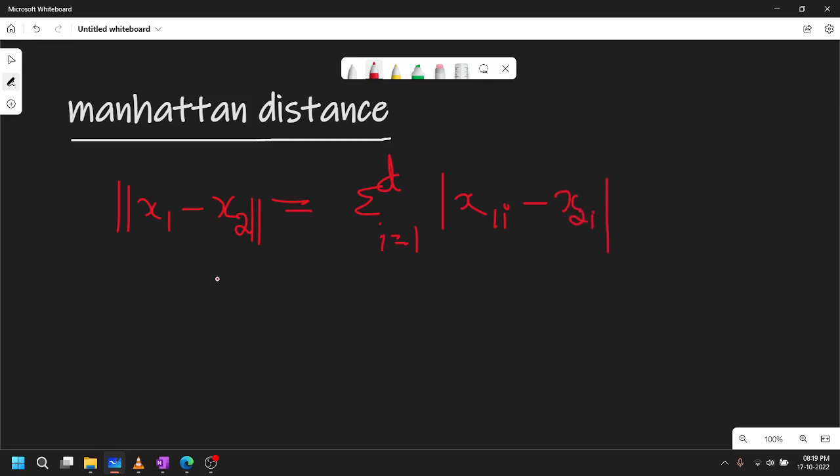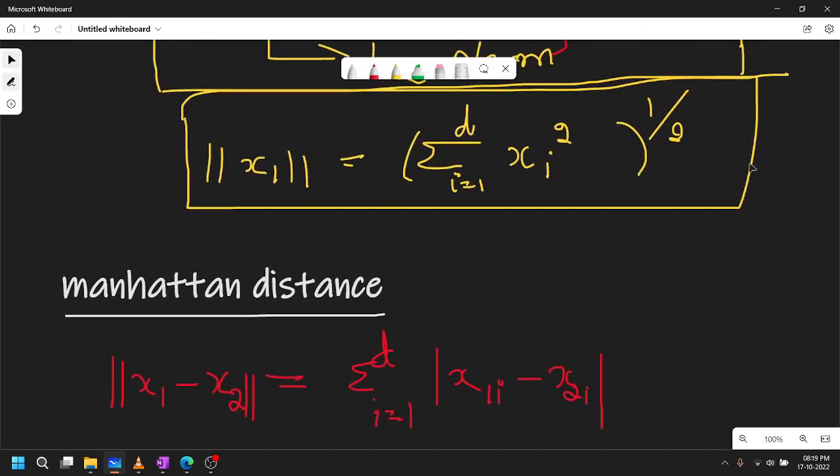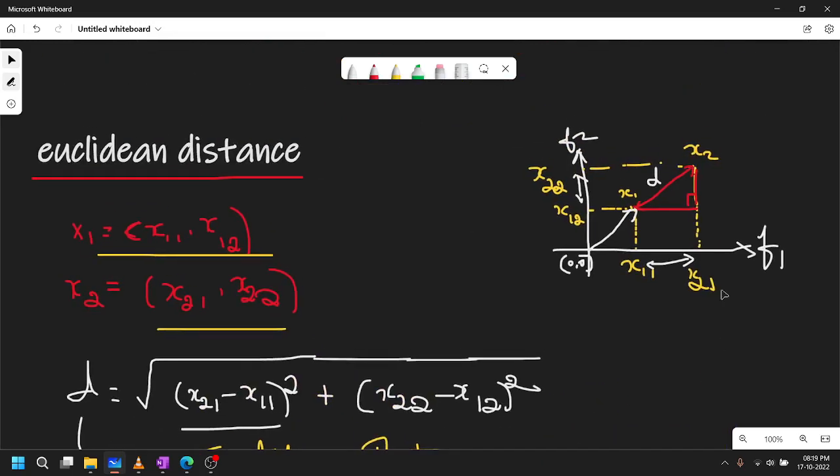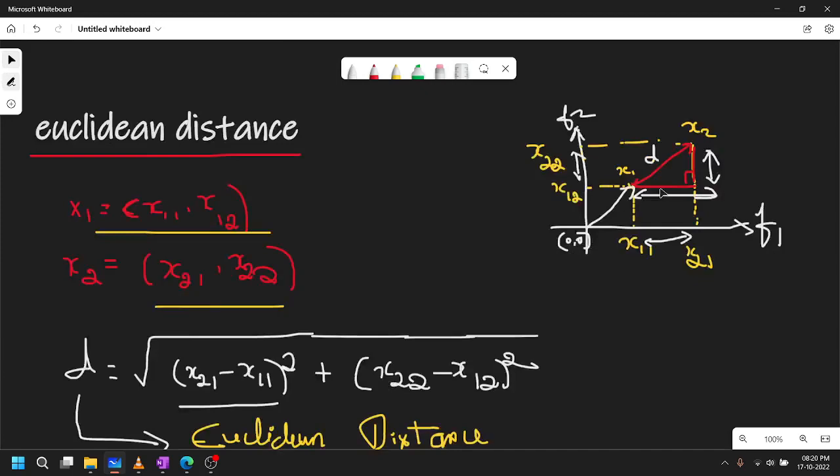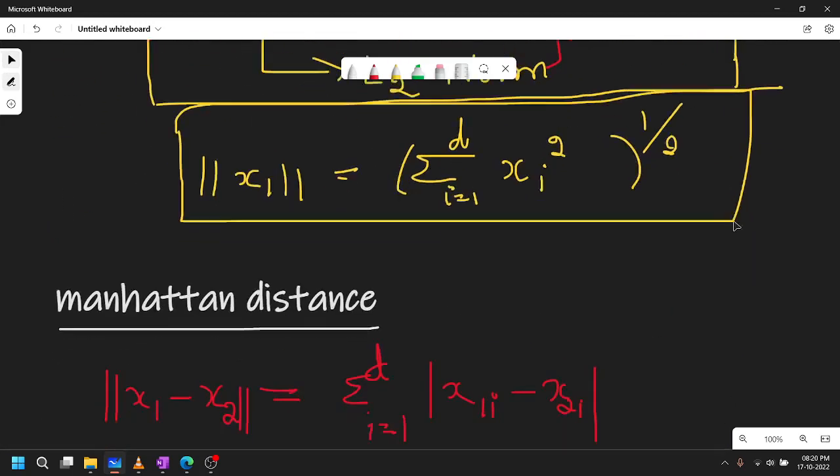So here actually we are summing both the distances. Looking at this graph, in Euclidean distance what we did was we took the distance and squared them, but here we will just be adding the distances. This is the Manhattan distance - summing the distance. That is the main difference between Manhattan and Euclidean distance.